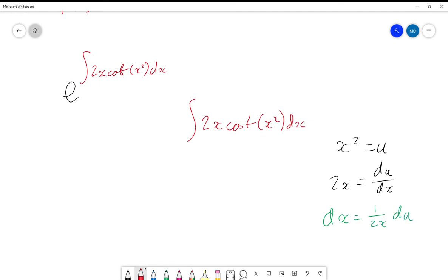And now plugging all that in I am going to end up with the integral of 2x cot(u) because x² is u and then dx is 1/(2x)du. These two x's are going to cancel and now we're just dealing with the integral of cot(u)du.